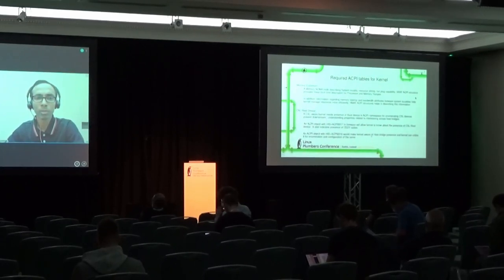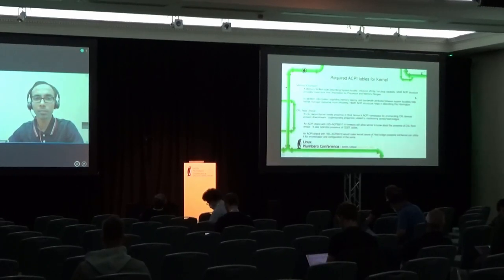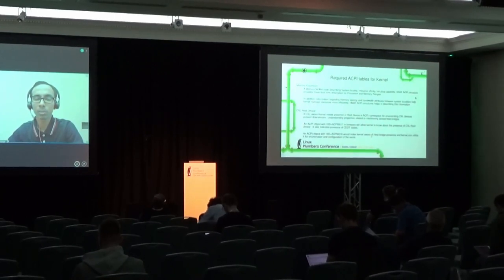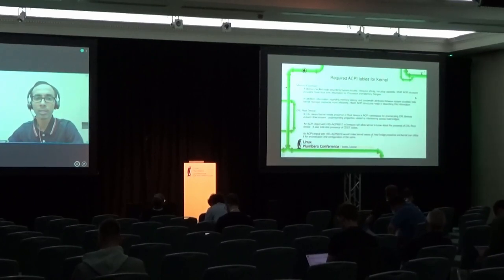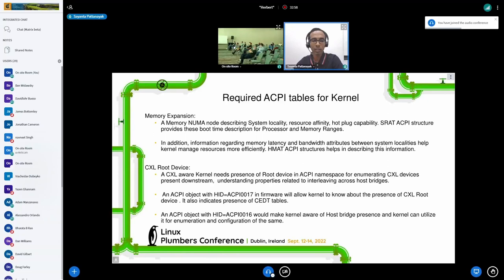From the point of view of the memory node, and from the point of view of the CXL root device, the CXL kernel expects the root device to be present in the ACPI namespace. For speaking of the integration of downstream CXL devices, and understanding the properties of interleaving across both bridges, that's why an ACPI object with an HID of ACPI0017 is needed. It would indicate to the kernel that there is a presence of a CXL root device, kicking off the enumeration process and discovering other devices in the downstream topology.